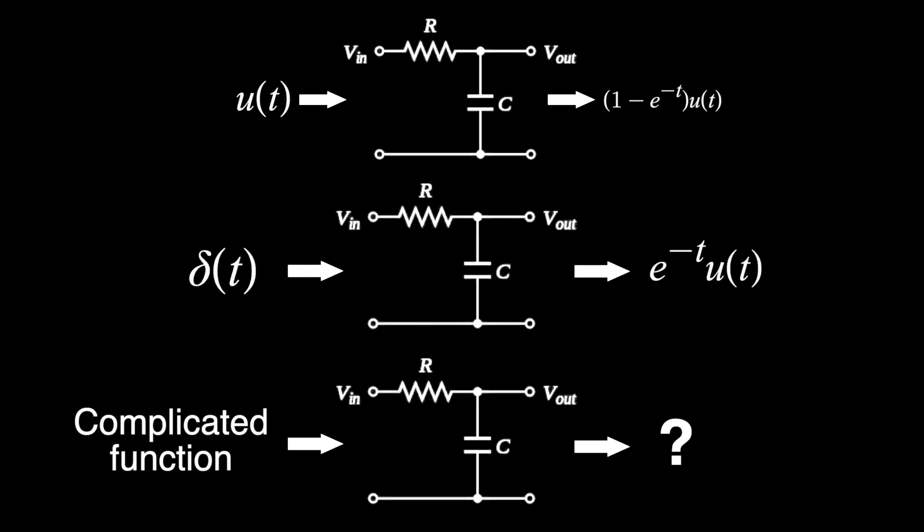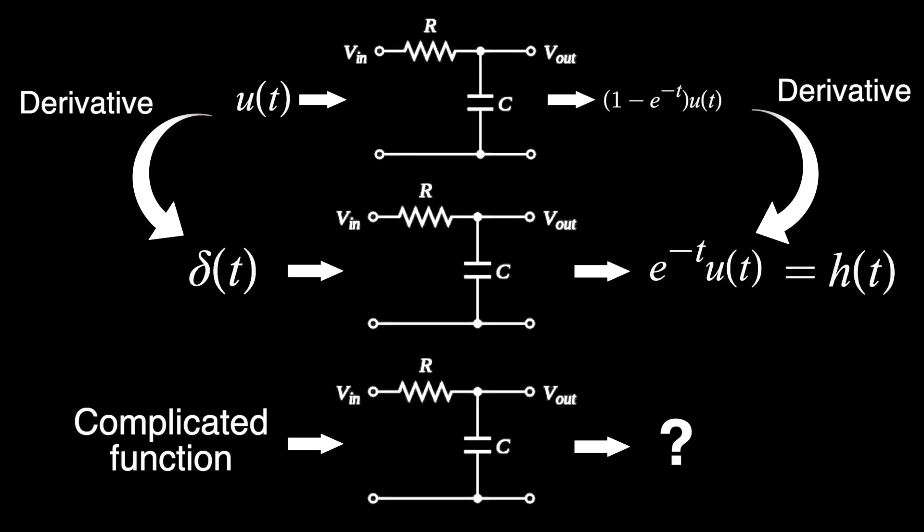That's the beauty of these types of systems. By taking the derivative on the input side, you just take the derivative on the output side, and you get your answer. And this here is the unit impulse response, which, again, we can use to find the response to any input to our system.